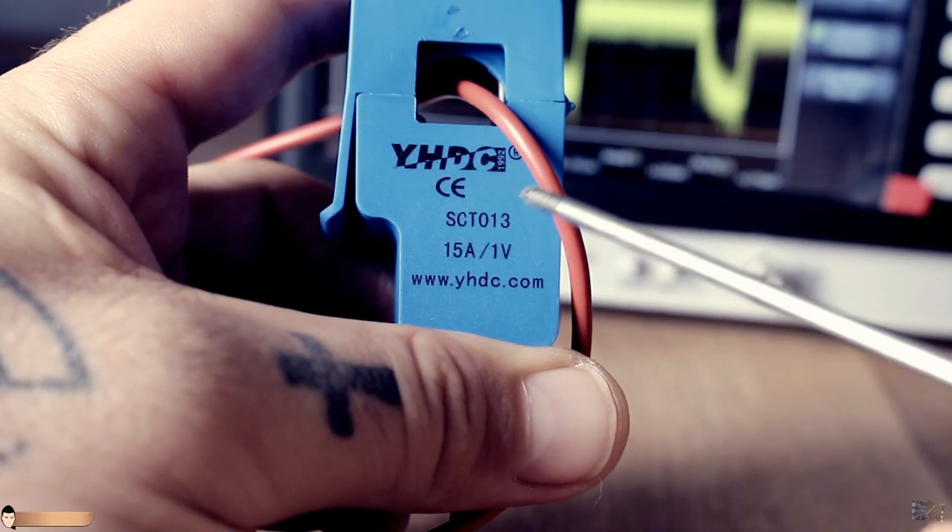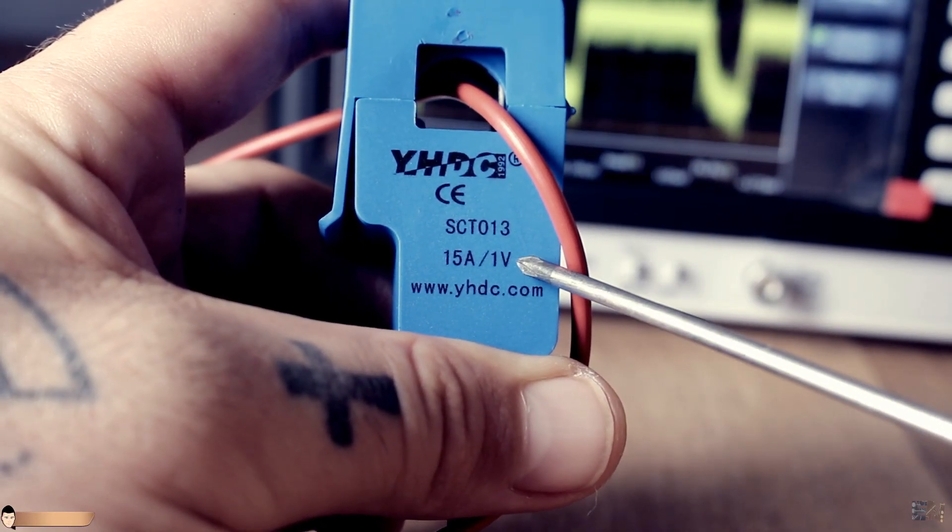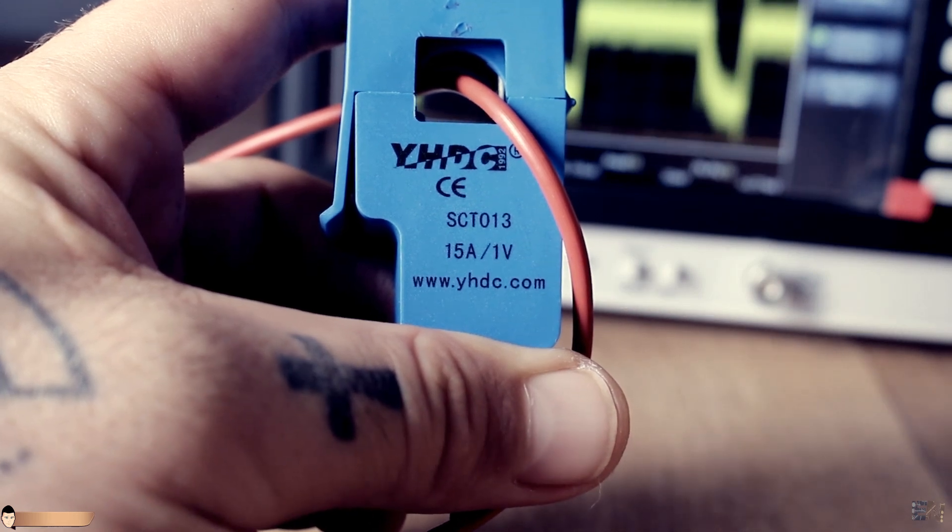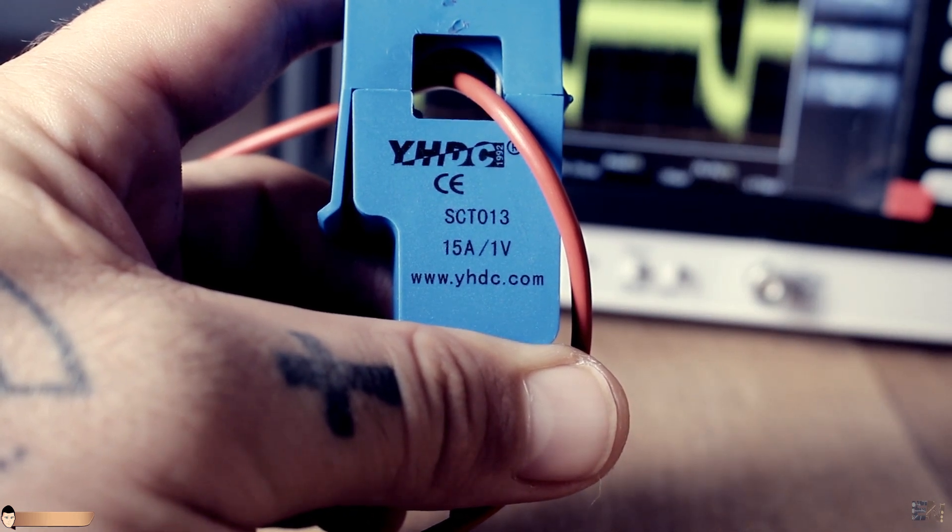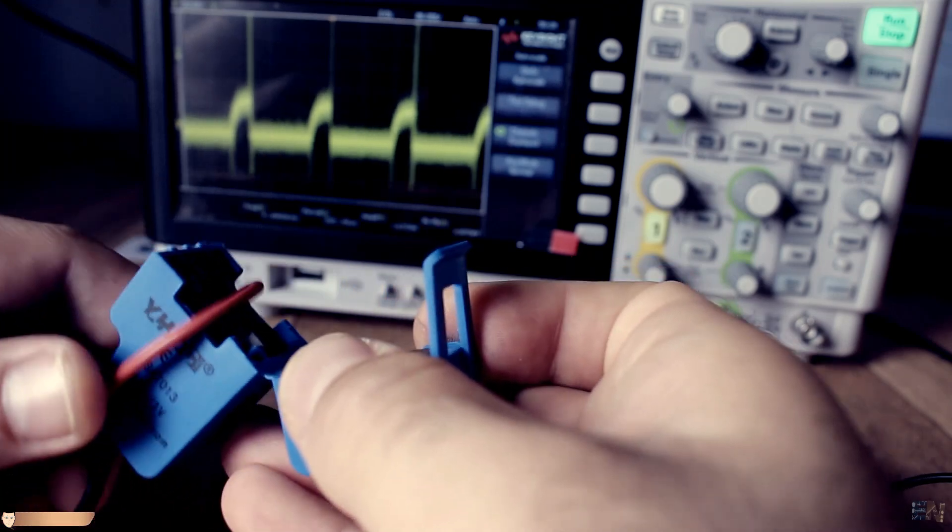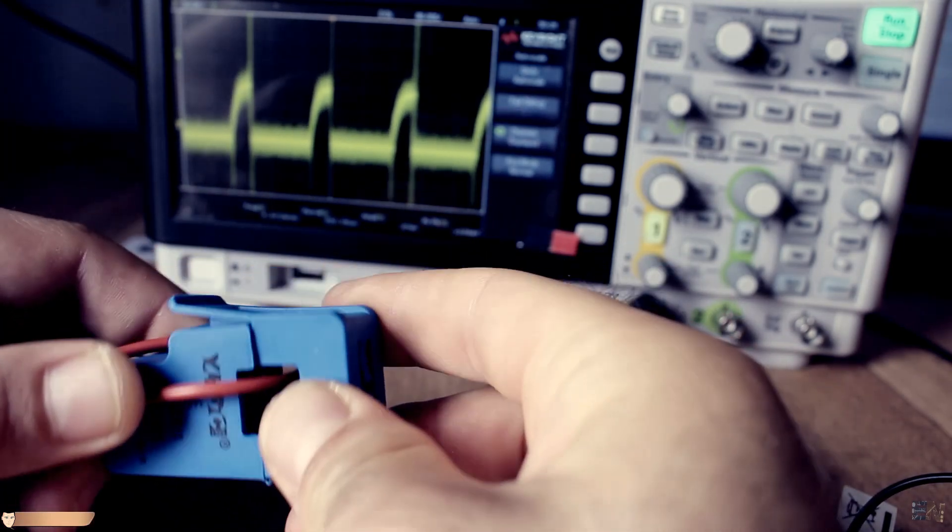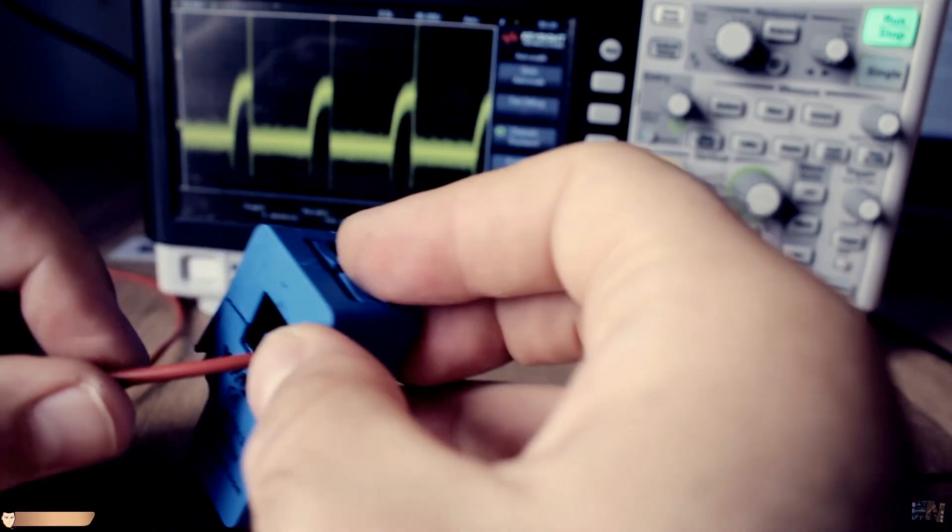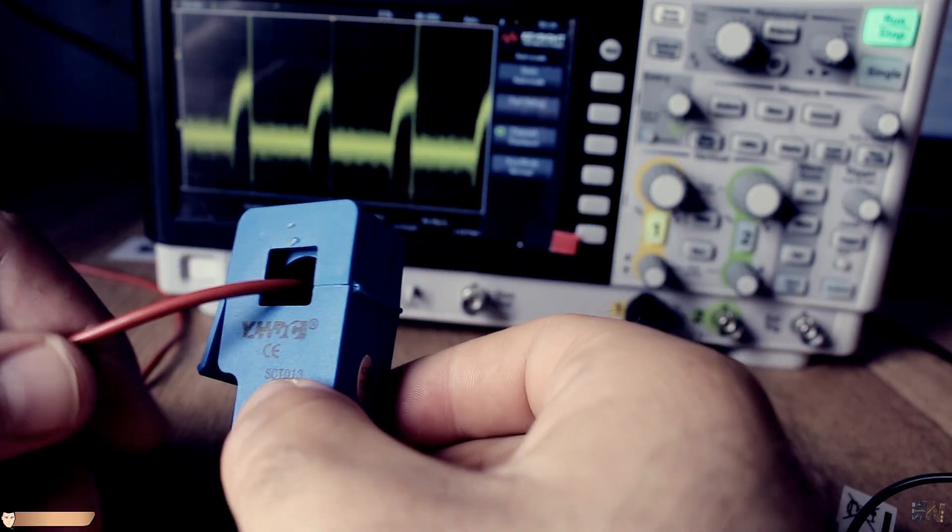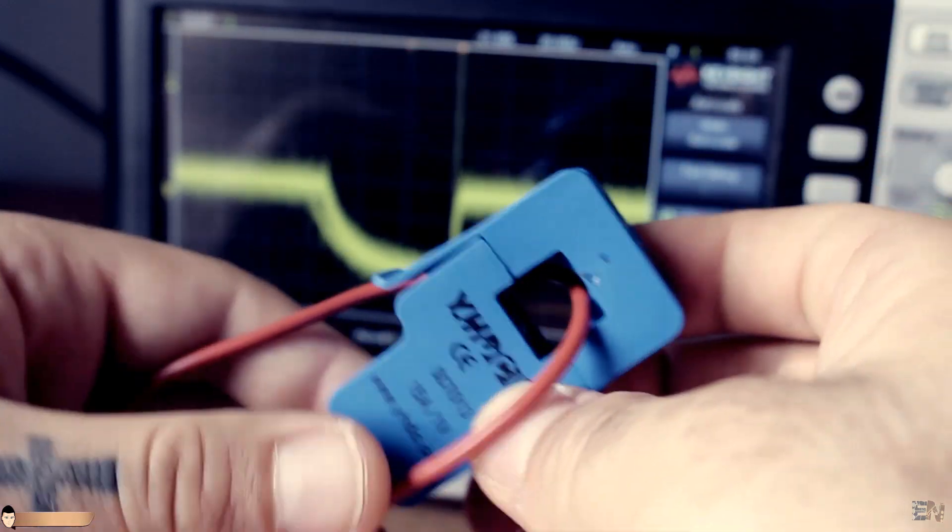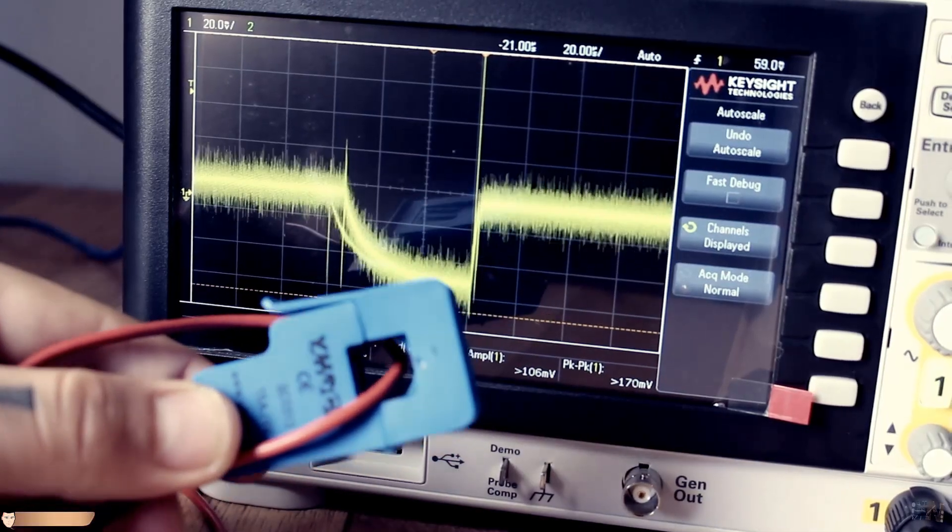This module already gives us the scale of the output voltage of 15 amperes per volt. So we should have 100 millivolts for a 1.5 amperes current passing through the wire. I connect this transformer to the oscilloscope and apply an AC signal through the wire. There you go, here I have my AC current on my oscilloscope. Quite easy right?